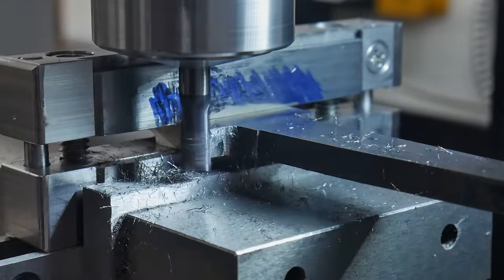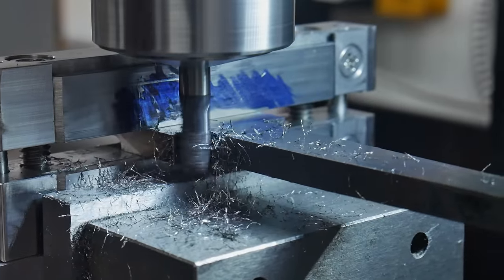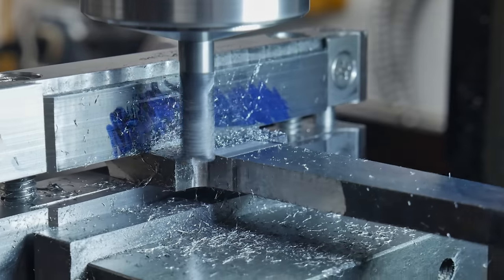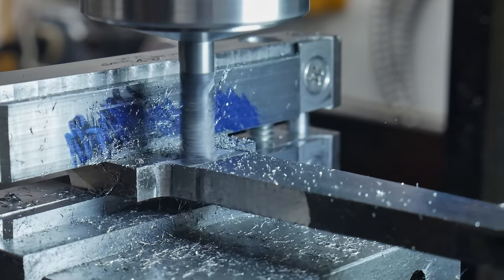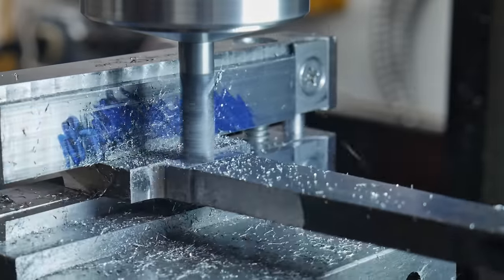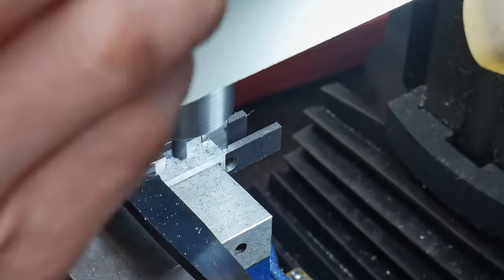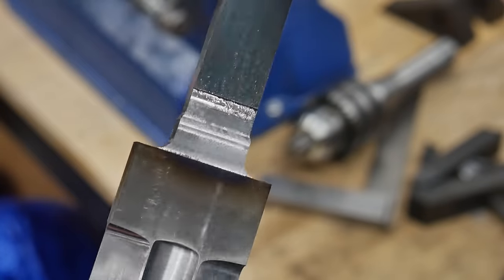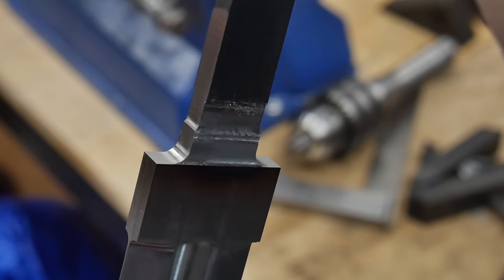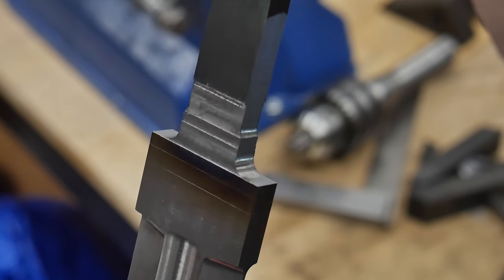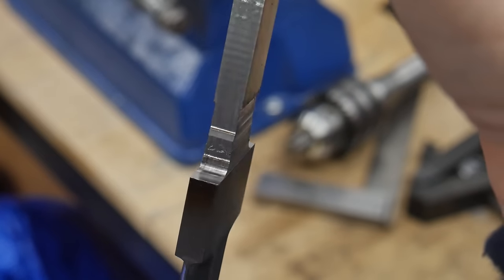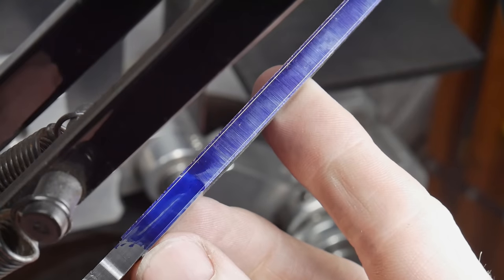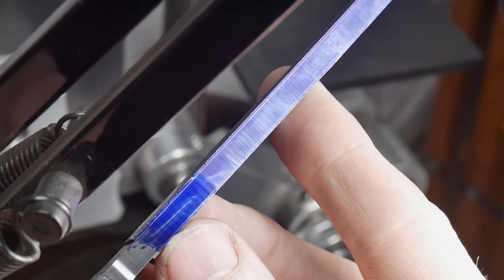I used a quarter-inch carbide end mill to mill in my shoulders and then I also relieved the ricasso by around eight thousandths of an inch to make my guard fitting easier. I then moved towards the tang side of the knife by around a quarter inch and relieved an additional five thousandths of an inch there. This ensures I won't have to deal with the majority of the tang while fitting my guard. This process worked out pretty darn good for me and definitely makes you realize how valuable a mini mill can be for the knife maker.